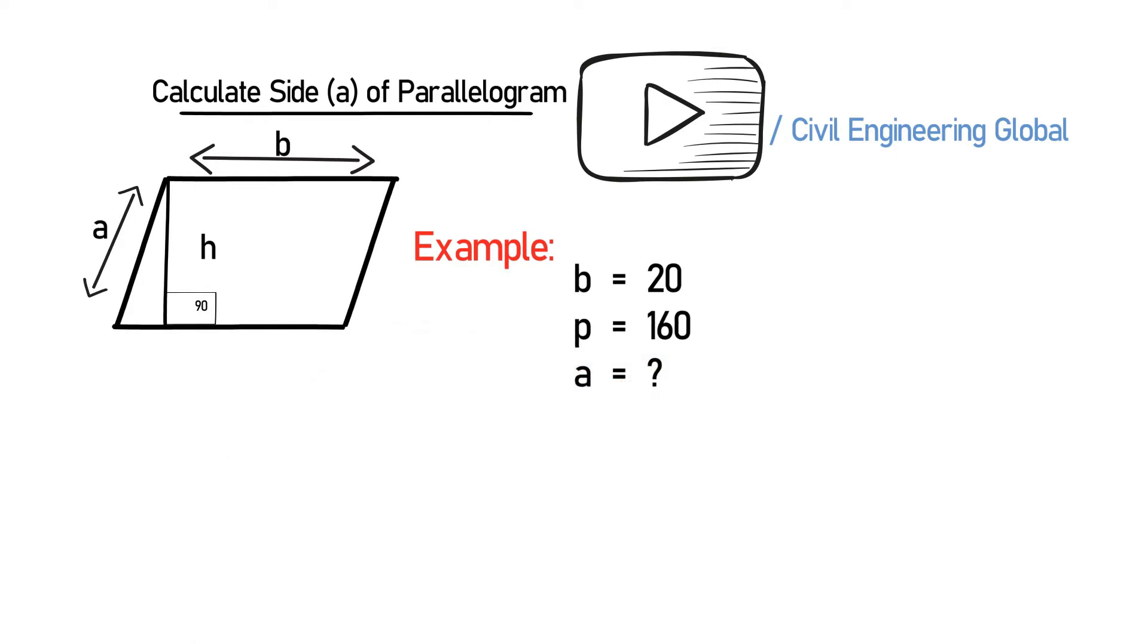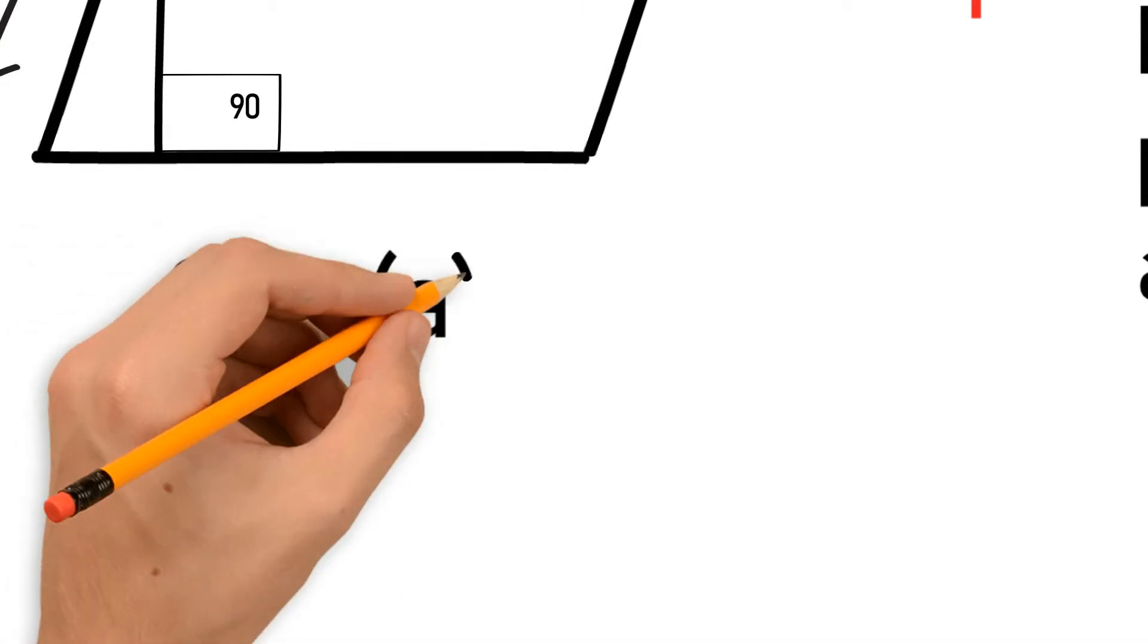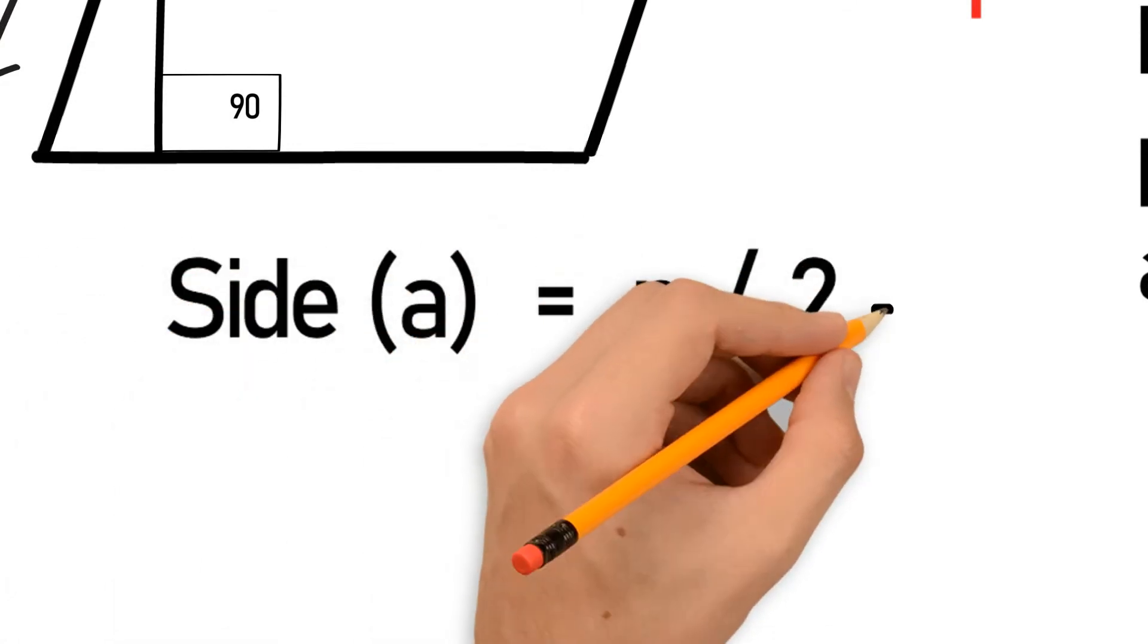So we have the formula to calculate side A of a parallelogram. Side A is equal to P divided by 2 minus B.